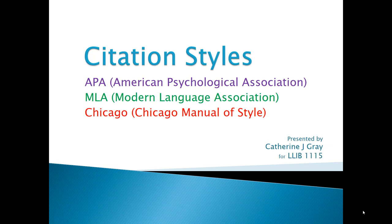Last week we talked about the importance of taking useful notes, and now we will look at how to cite those sources of information. There are three main styles used in college research: the APA, developed by the American Psychological Association; the MLA, developed by the Modern Language Association; and the Chicago Manual of Style, established by the Chicago Tribune.